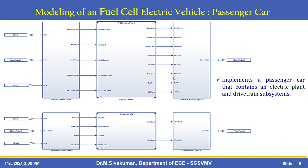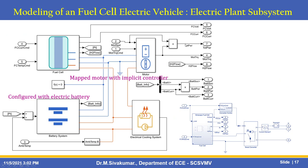The Passenger Car block implements a passenger car that contains an electric plant and drivetrain subsystems. The electric plant is configured with an electric battery and a fuel cell. The fuel cell is a subsystem using a DC-DC boost converter, along with current sensors and thermal sensors. The fuel cell is connected to the motor, with options to choose the motor type. An electrical cooling system is also involved in the electric plant subsystem.